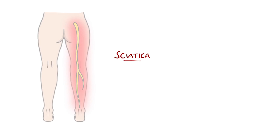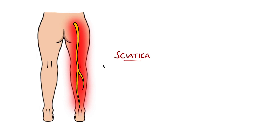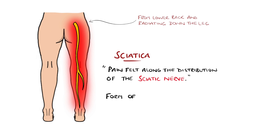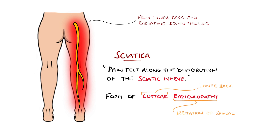Sciatica is the term used to describe pain along the distribution of the sciatic nerve, from the lower back and radiating down the leg. It is a form of lumbar radiculopathy, where lumbar refers to the lower back, and radiculopathy meaning irritation of the nerve roots coming out of the spine.